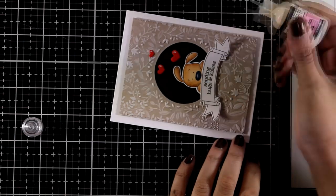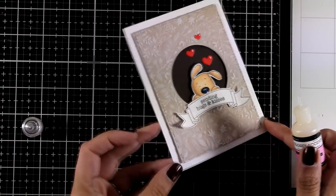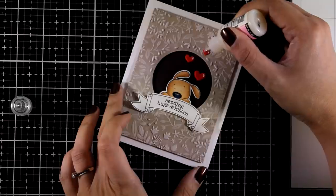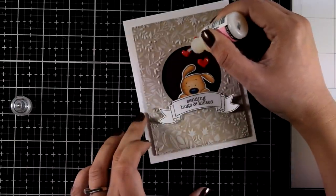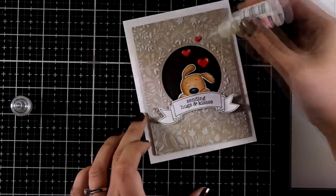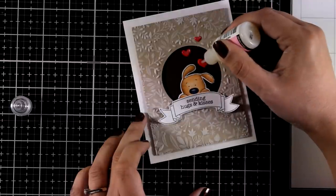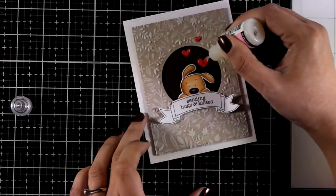Now I did add some highlights on the hearts with my gel pen and I'm also going to add glossy accents on the dog's nose as well as on the hearts. Glossy accents always looks a little bit milky but when it dries it's completely clear and it's going to add a lovely shine on my project.